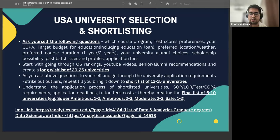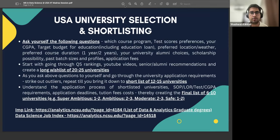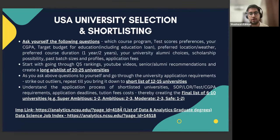The four categories are: super ambitious — generally one to two universities; ambitious — two to three; moderate — two to three; and safe — where you feel that if you apply, you are definite you will get an admit and are fine attending that university. North Carolina State University has provided very good resources: they have an interactive map and a detailed list of all data-related programs by year and US state, which will help you create your own custom shortlist.